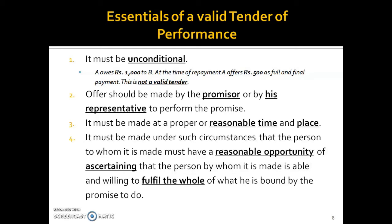It must be made under such circumstances that the person to whom it is made has a reasonable opportunity of ascertaining that the person making it is able and willing to fulfill the whole of what the promise requires. Is it an empty offer, or is that person actually capable and willing to fulfill the promise? For example, if A offers B 500 rupees now and promises 500 later — this is a conditional tender, but it may become valid if B has reasonable grounds to believe A can and will pay the remaining amount.